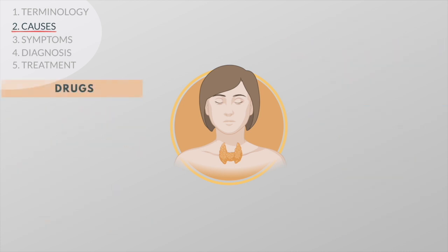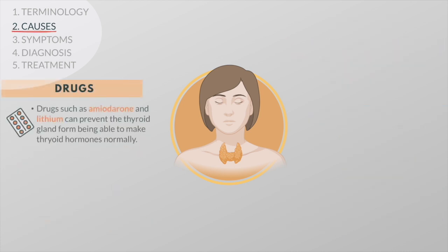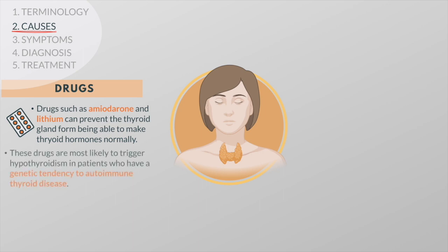Drugs such as amiodarone or lithium can prevent the thyroid gland from being able to make thyroid hormones normally. These drugs are most likely to trigger hypothyroidism in patients who have a genetic tendency to autoimmune thyroid disease.